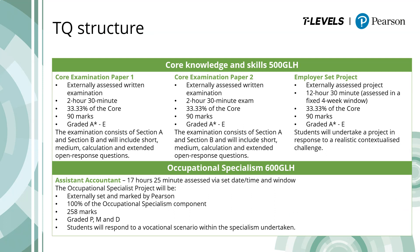This slide contains an overview of the Technical Qualification, or TQ for short. The TQ is split into two components: the core and the Occupational Specialism. There is one Occupational Specialism — Assistant Accountant — which is 600 guided learning hours and is assessed through an Occupational Specialism project. For this particular TQ, your students must undertake the core component and the Occupational Specialism. The core and Occupational Specialism components can be delivered however you feel is best for your students, including the integration of their industry placement and access to expertise and resources at your centre.